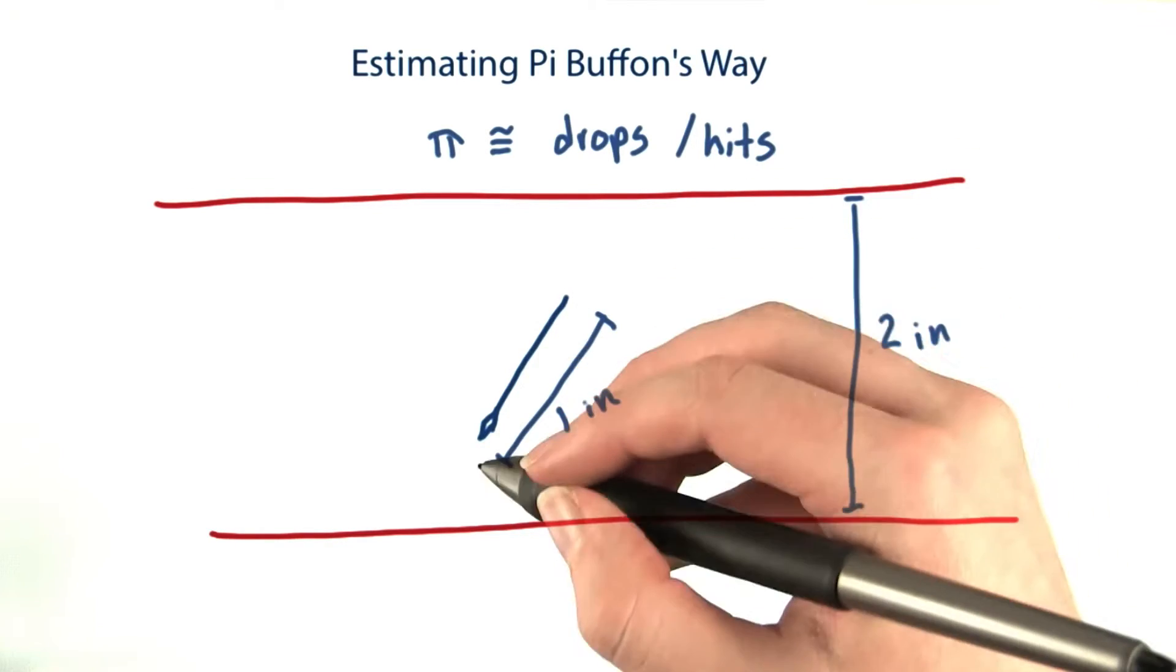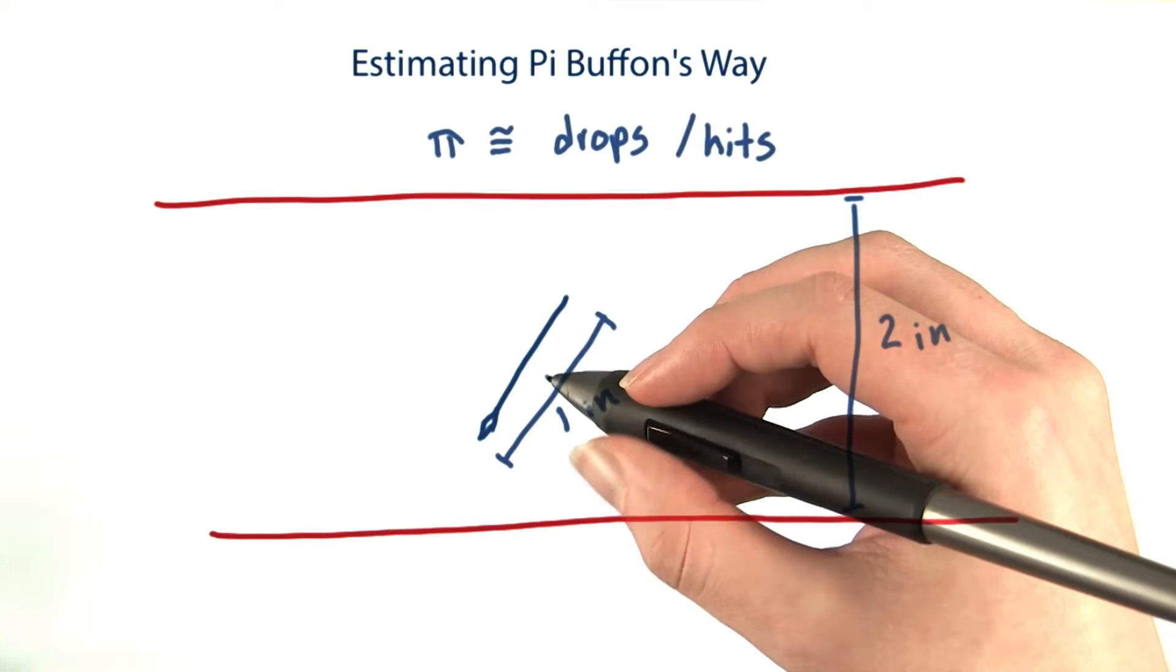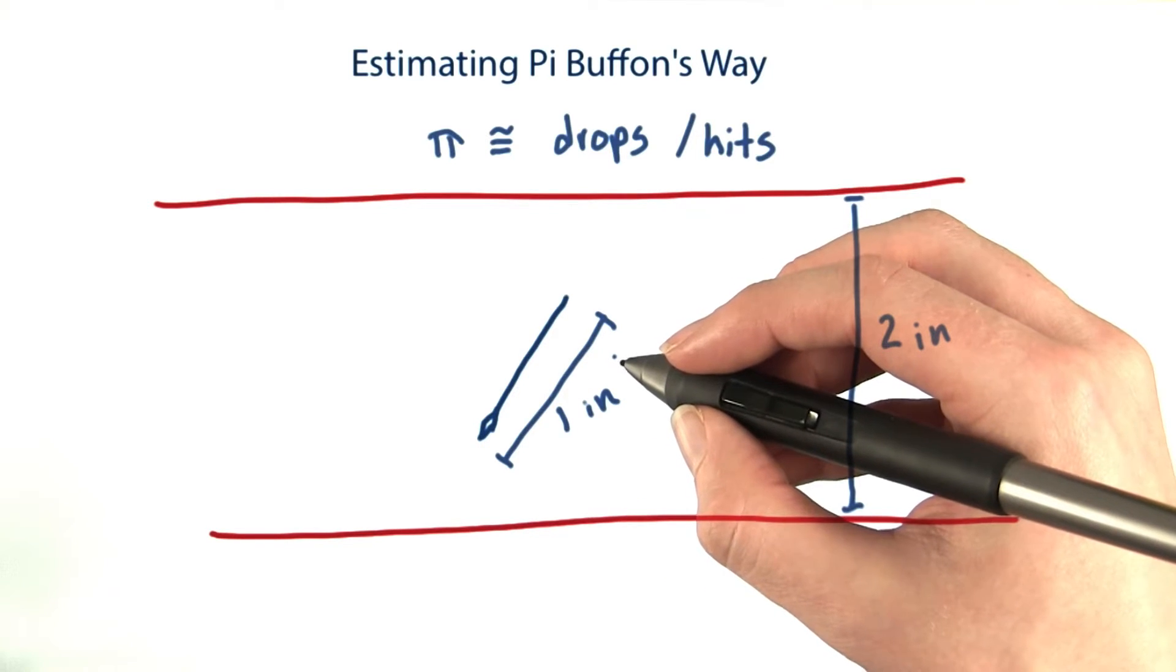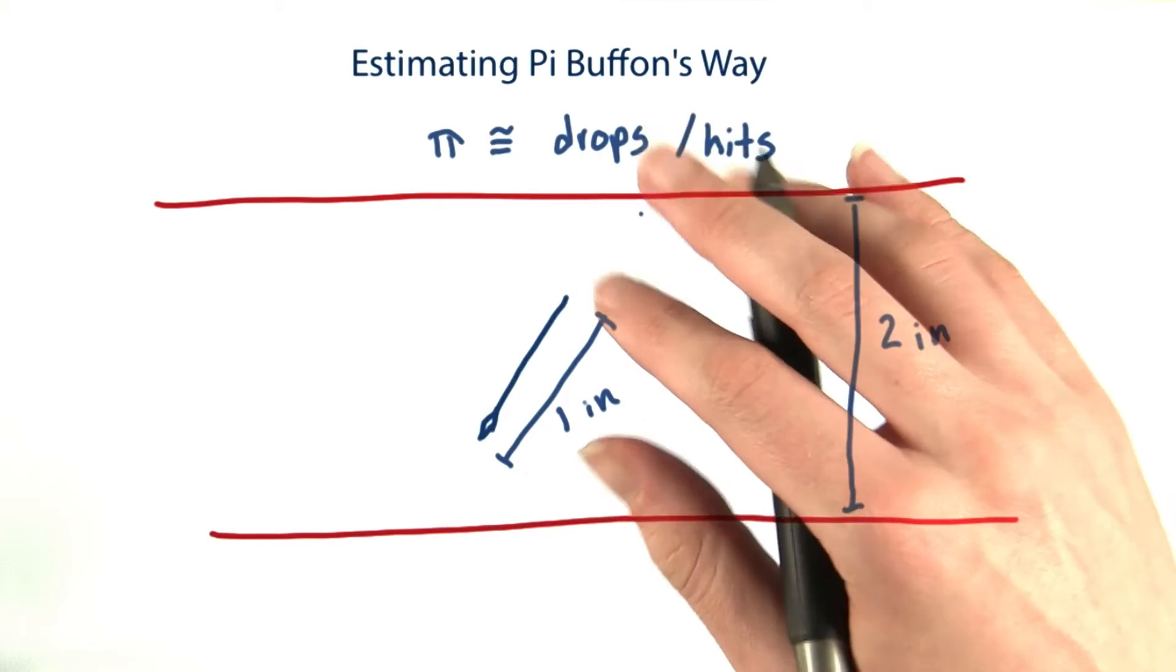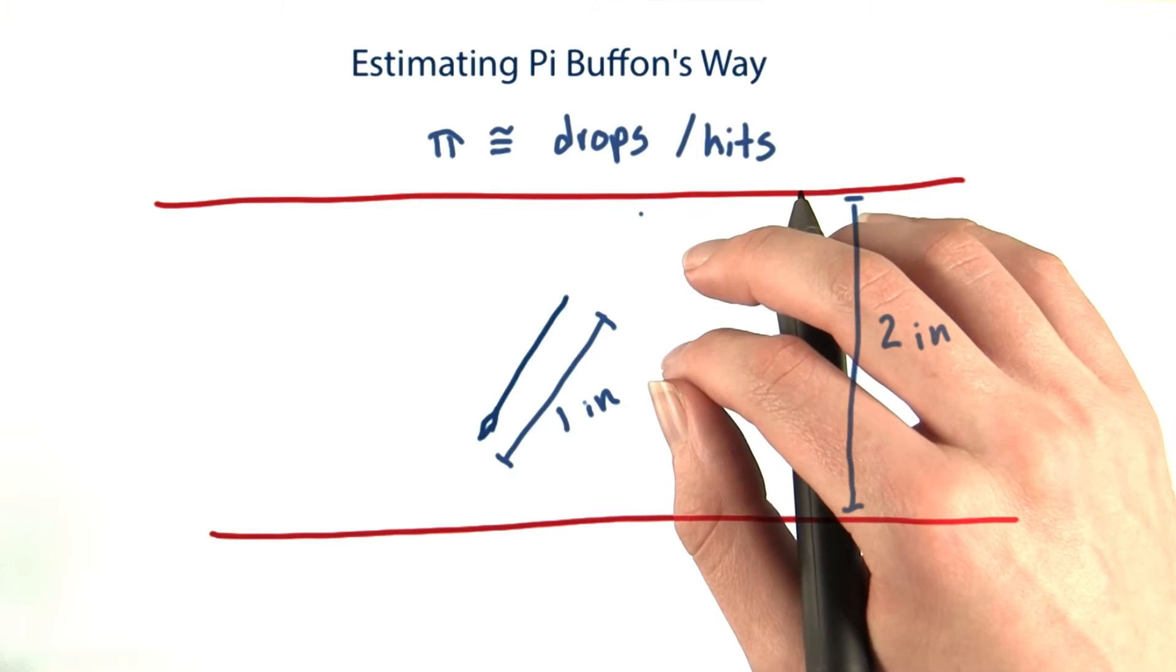Clearly dropping a needle on the floor and measuring whether it touches a line thousands of times is not a job that anybody wants to do. Thankfully, we can make our computers simulate the experiment for us.